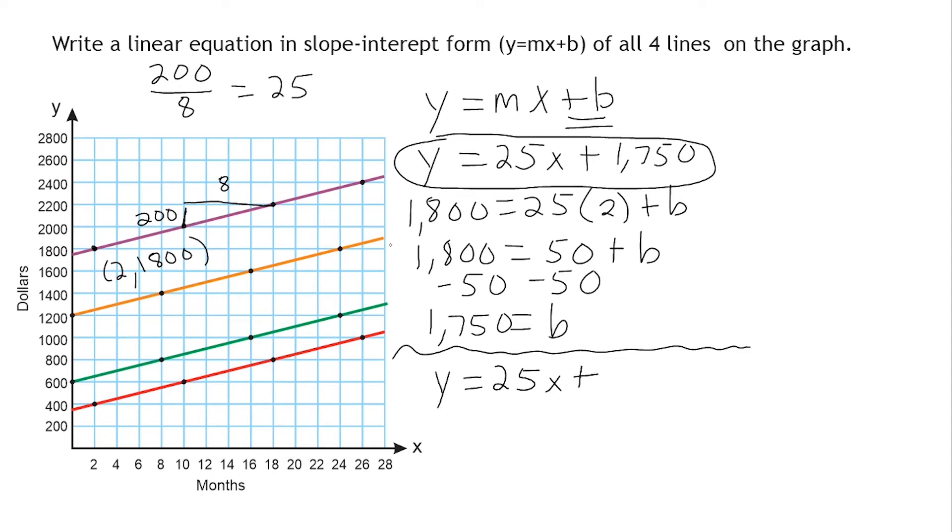And for the y-intercept this time, it's going to be really easy because we can clearly see that it is intersecting the y-axis exactly at 1,200. So we just write 1,200 at the end of our equation, and that is it. We already have our equation.